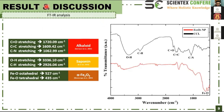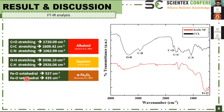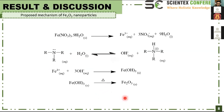The functional groups of the leaf extract were checked using FTIR analysis. The vibrations at these wavenumbers correspond to C=O double bond stretching, C=C double bond stretching, and C-N bond stretching, which represent the existence of alkaloid compounds. Meanwhile, vibrations of O-H and C-H bond stretching indicate the presence of saponin compounds. Moreover, the vibrations at 527 and 435 cm⁻¹ are assigned to tetrahedral and octahedral sites of the iron oxide crystals.